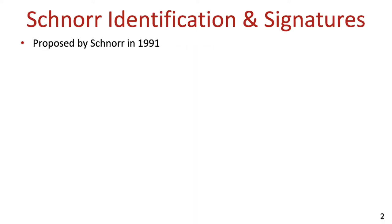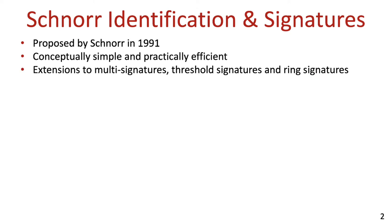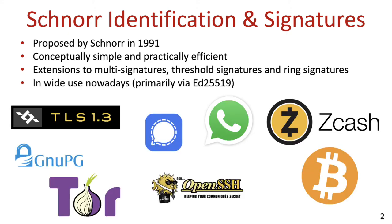Schnorr's identification and signature schemes were proposed by Schnorr back in 1991. They are simple and efficient, but at the same time allow for many generalizations, extending their functionality to primitives such as multi-signatures, threshold signatures, and ring signatures. This makes them an appealing choice of signatures, and indeed they are being widely adopted since the patent on them expired, and are currently in wide use in a variety of applications from cryptographic protocols, messaging applications, and blockchains and cryptocurrencies.